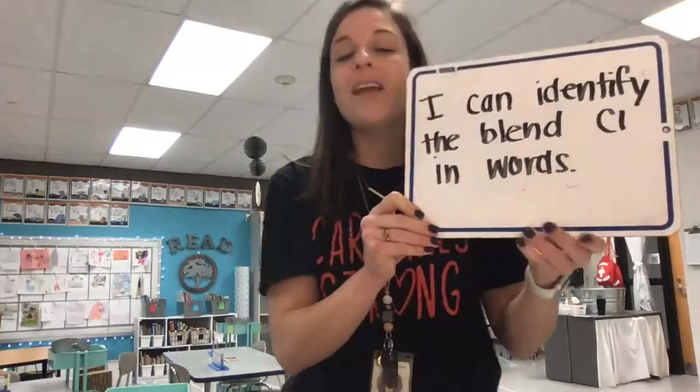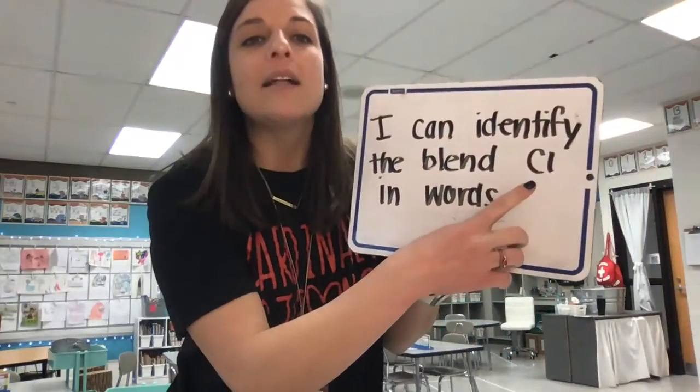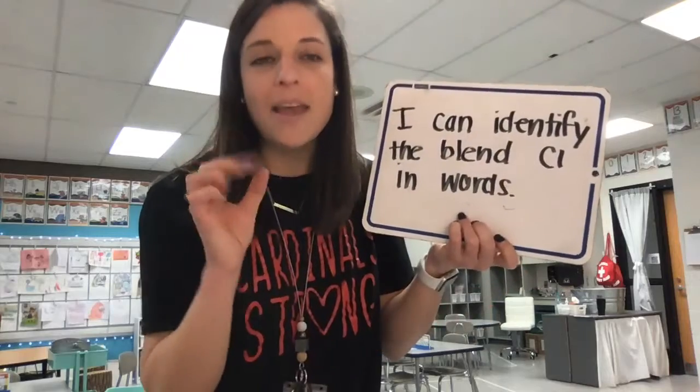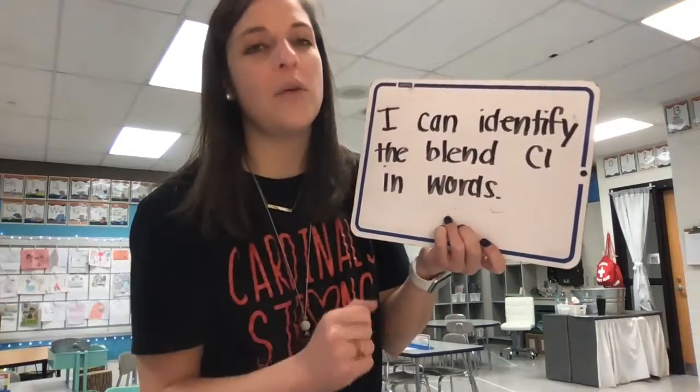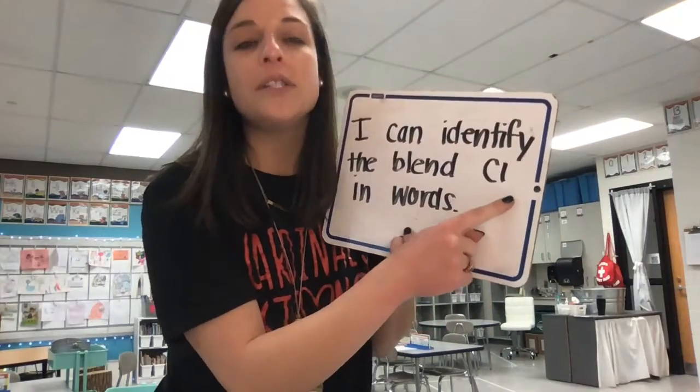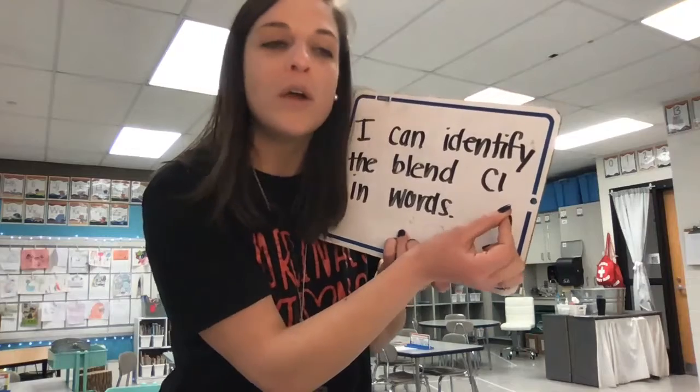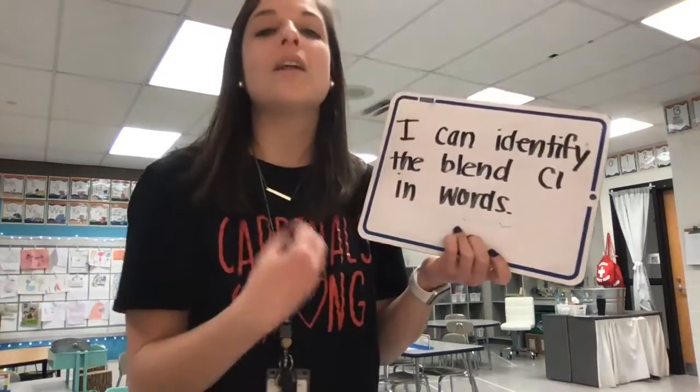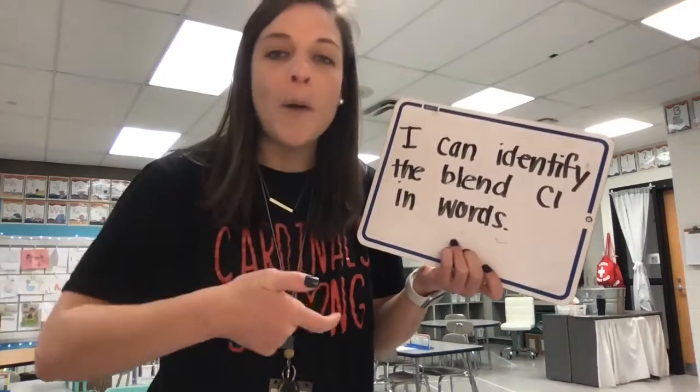So yesterday we learned a new blend: CL. When C and L are together in a word, they say cl, cl. So they make a shorter sound cl together. We know C says c, L says l, and when we put those together quicker we say cl, like in the word clam. So we circled pictures yesterday that we heard the CL blend in and colored those pictures when we were finished.